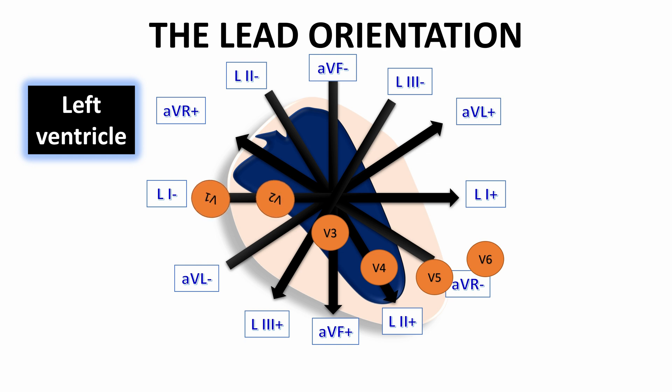V1 and V2 chest leads are closer to the right wall of the left ventricle, near the septum that separates both right and left ventricles. So they represent the changes that occur in the septal wall of the left ventricle.